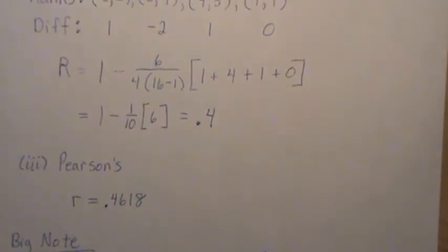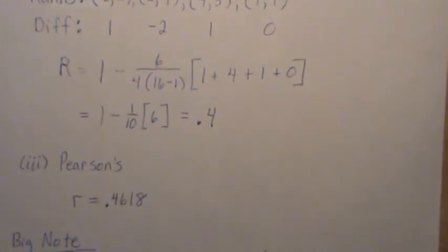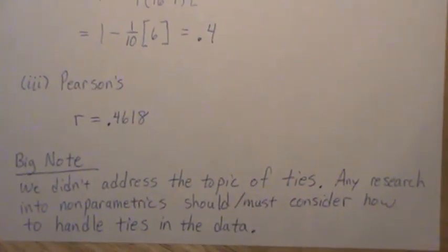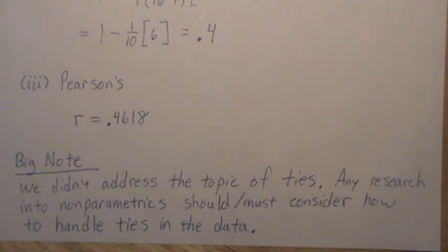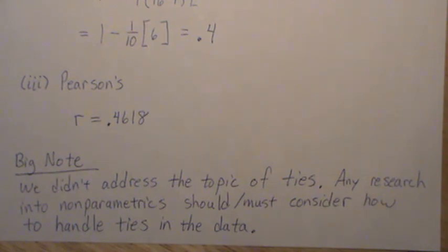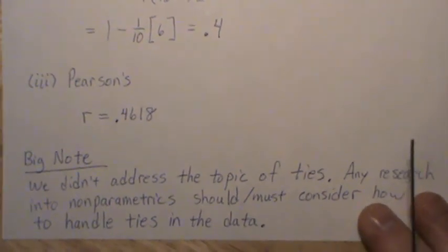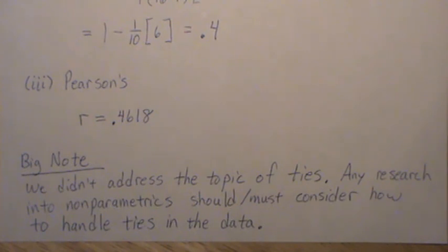For comparison, Pearson's correlation on this data gives 0.46. So all three measures are in the same ballpark. One important note before we end: we did not address ties. Any research into non-parametrics must consider how to handle ties in the data — it's actually a big area of debate. There's one method used most often, and other approaches claim to be better, but results vary, so it remains a wide-open topic.